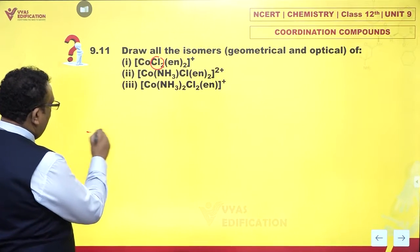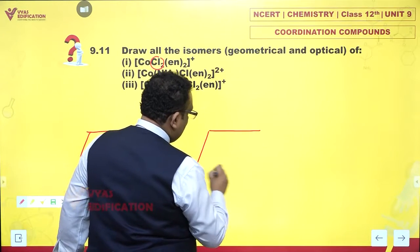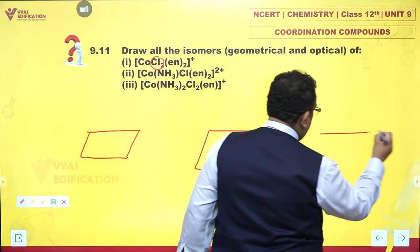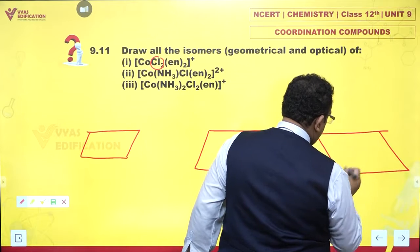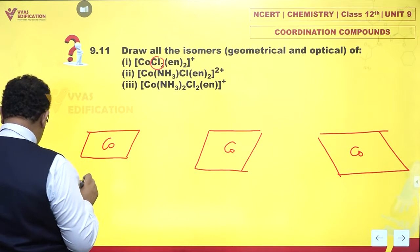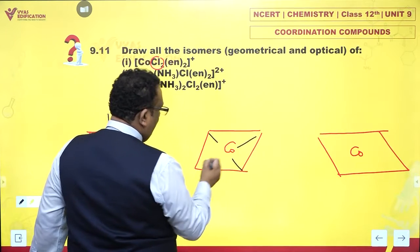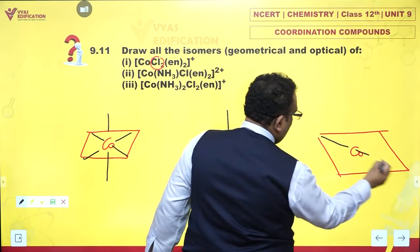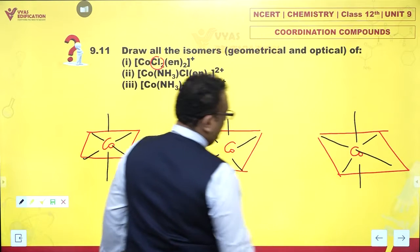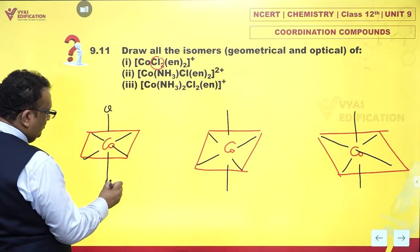Let me start by drawing them. This is octahedral geometry, right? So this is what I'm going to get. We have cobalt, we have cobalt, and we have cobalt. I'm just drawing an octahedral structure and trying to put ligands on that.